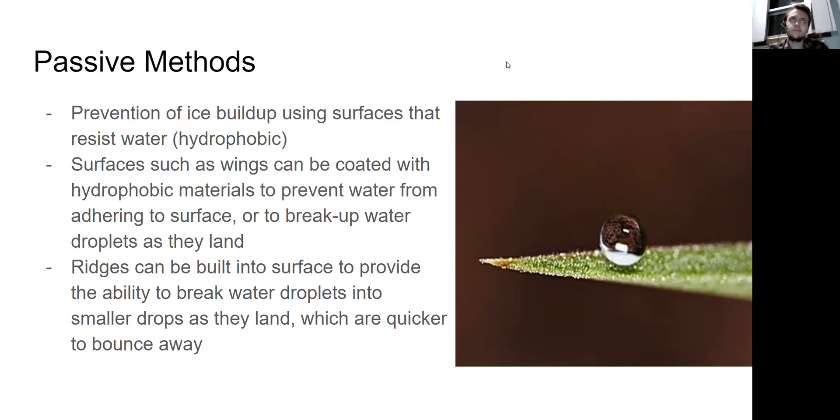Think of like wax on a car. If you don't wax your car, it tends to have water stick to it and you can get water spots and stuff like that. But when you apply wax to a car, the water sort of just beads off the car because wax is hydrophobic. And additionally, ridges can be built into the surface of the wing itself or other aerodynamic surfaces to provide the ability to break water droplets into smaller drops as they land. So as they fall onto the surface and hit these ridges, the water droplets break into smaller drops. And these drops are quicker to bounce off of the surface, which means that there's less time for the water to adhere to the aircraft and become ice.